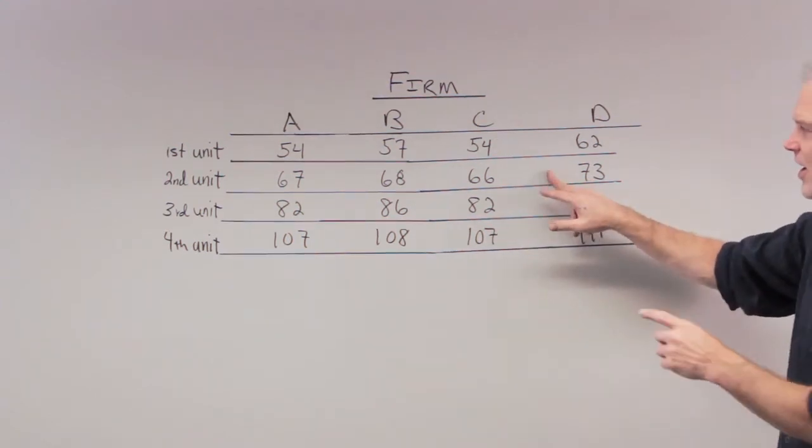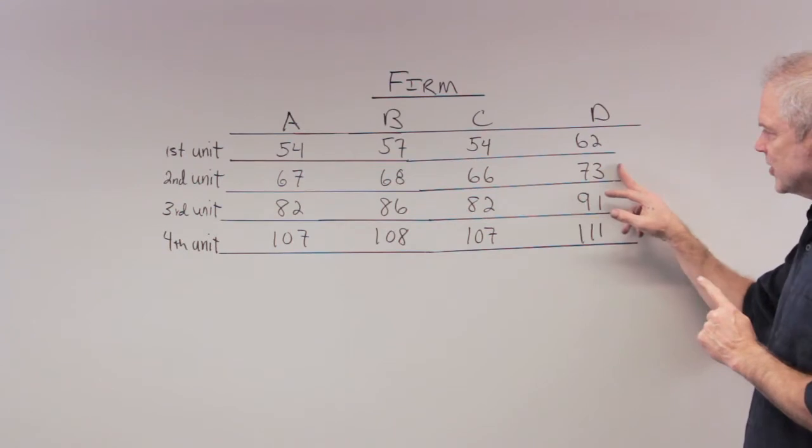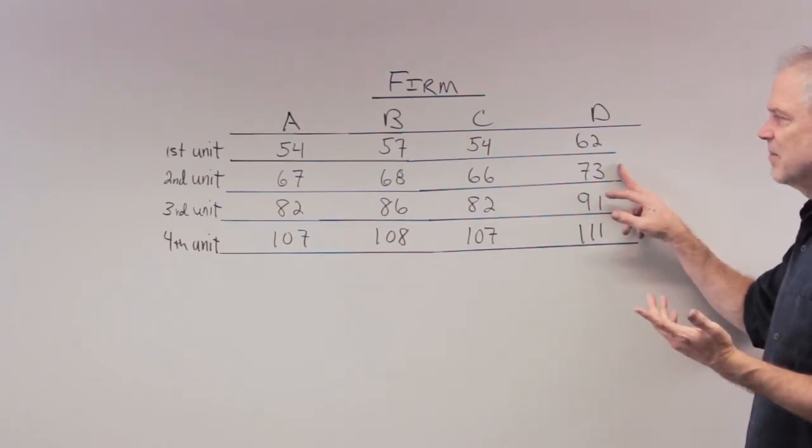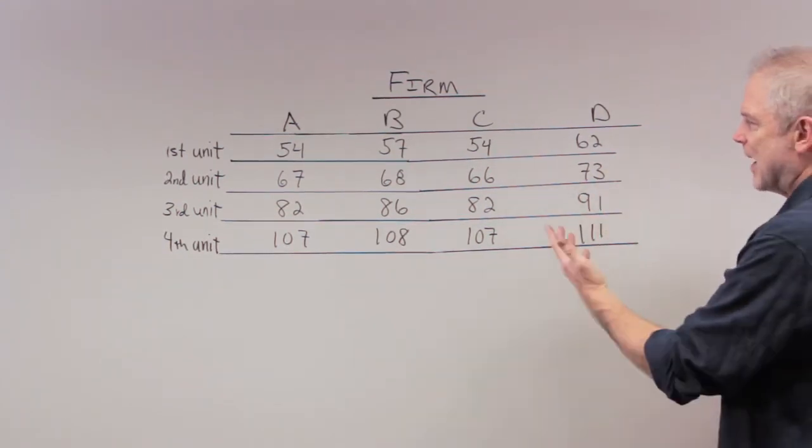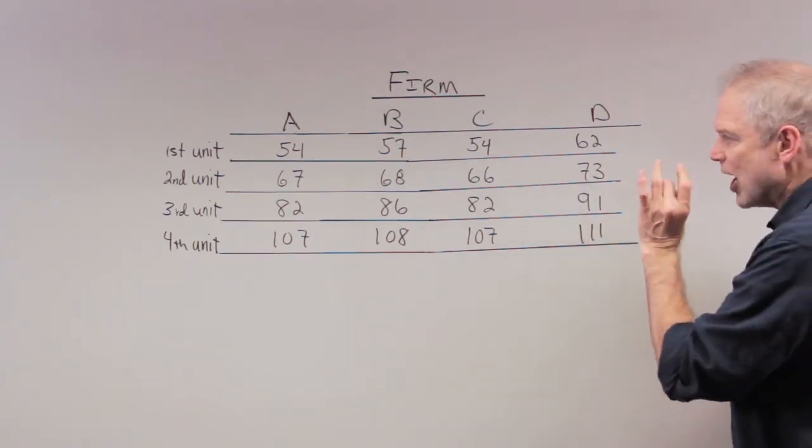Why? Because at $69, we'd only get rid of 7 units of pollution. This right here, the firm would say, it's $69 for a permit. I'll buy the permit and pollute this one. I'll just do it myself.